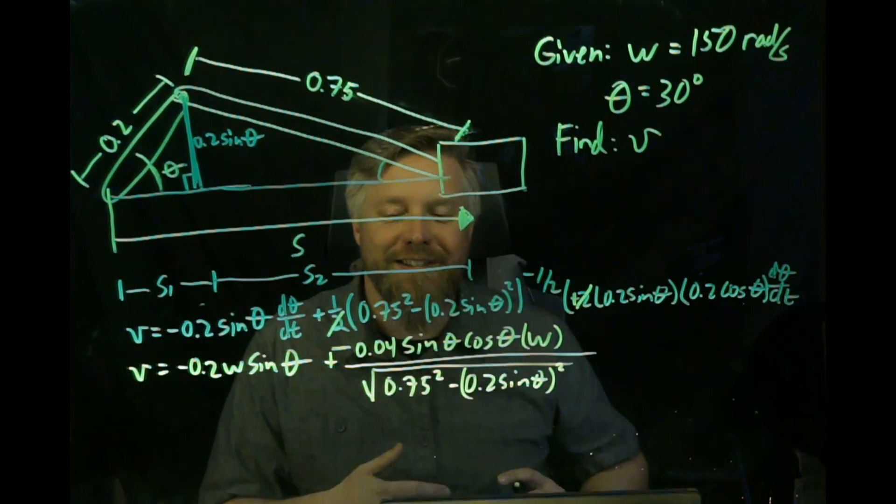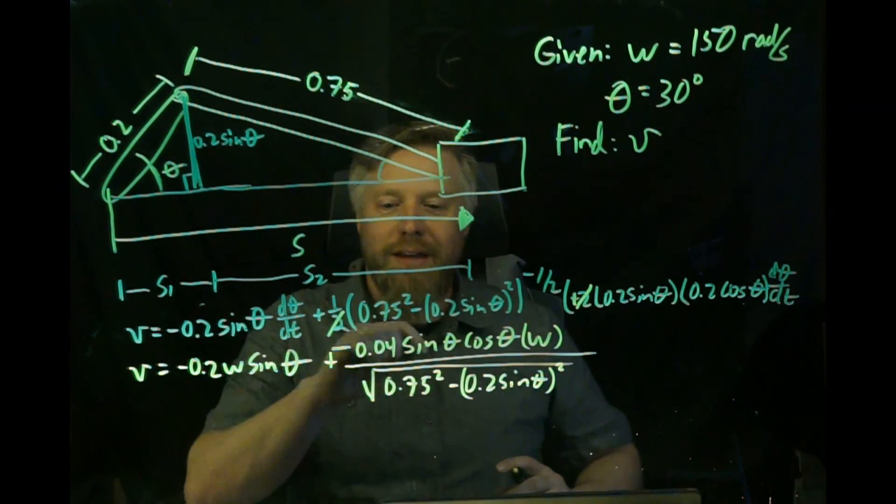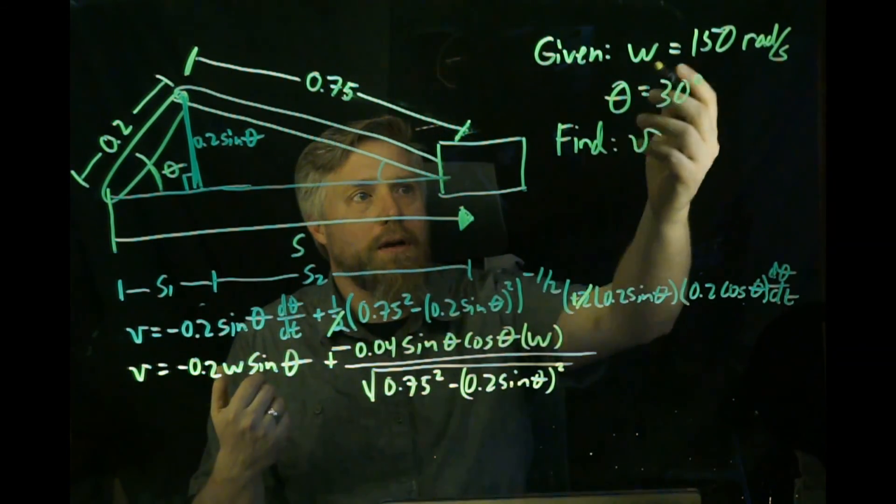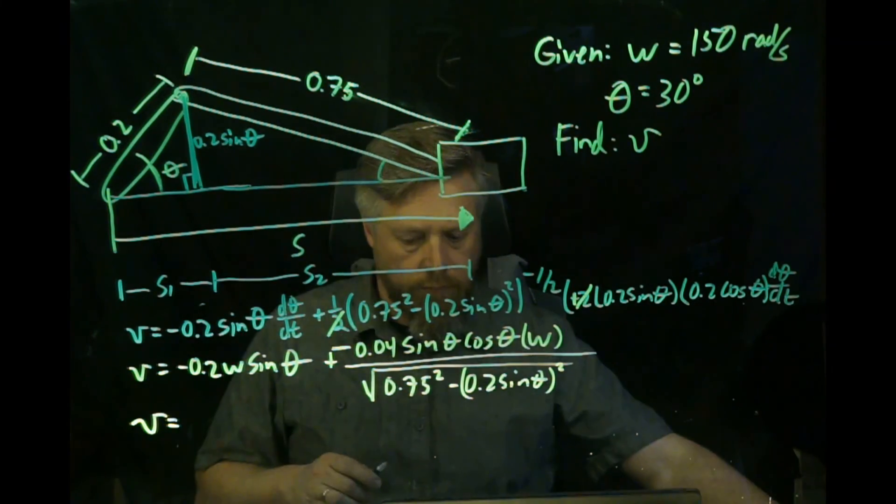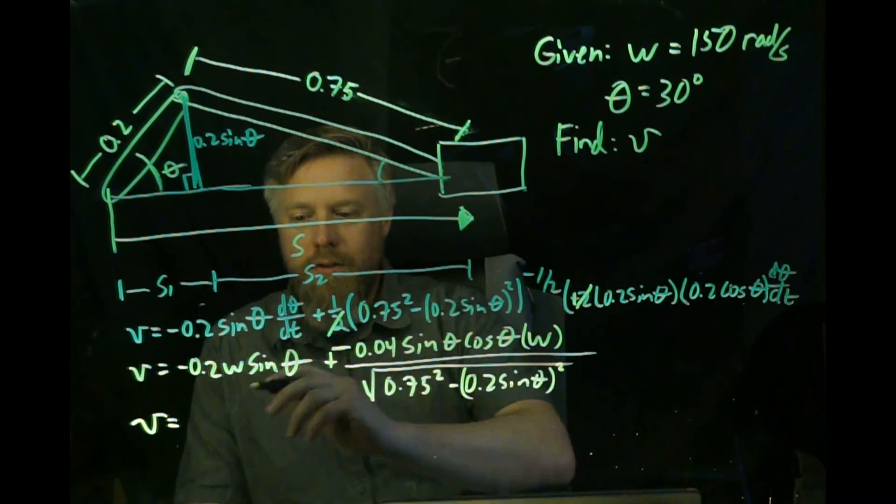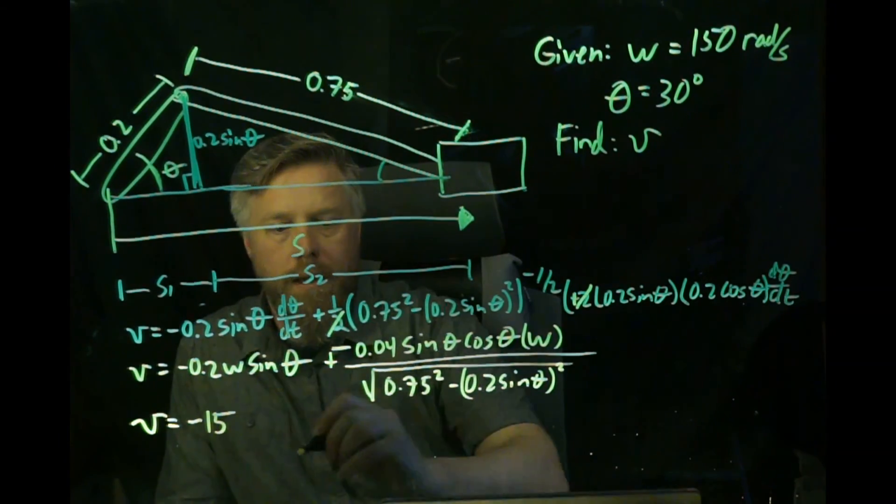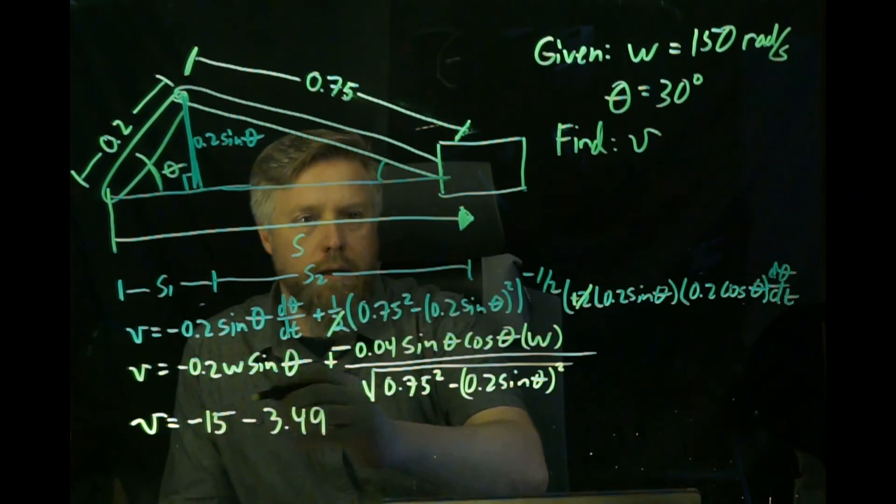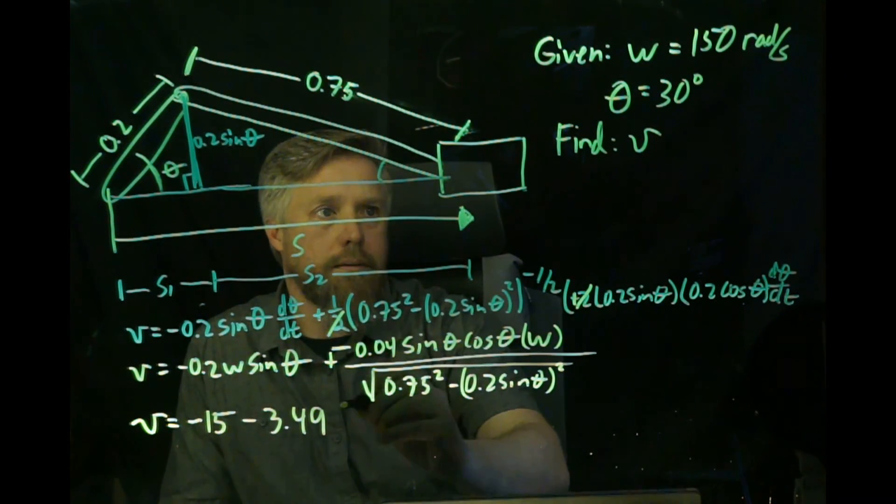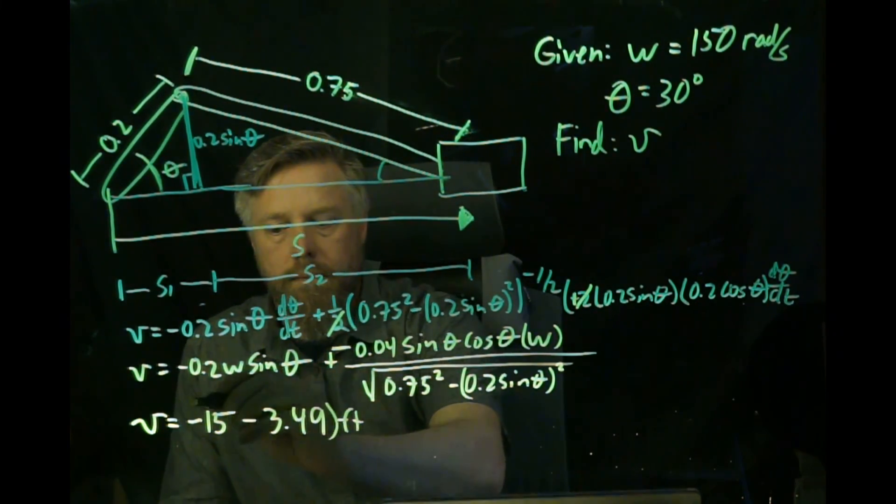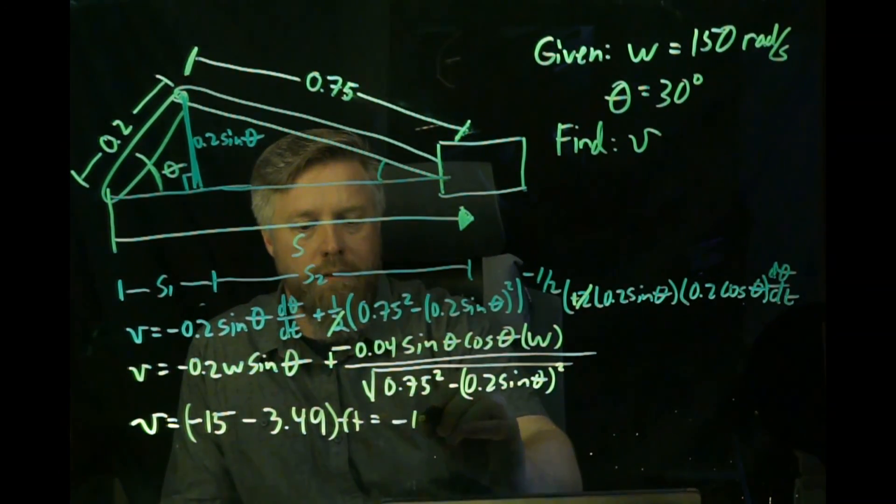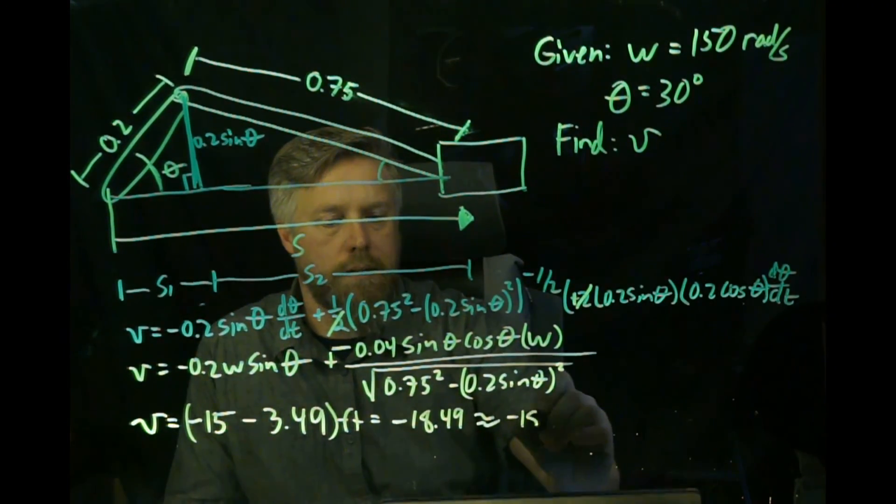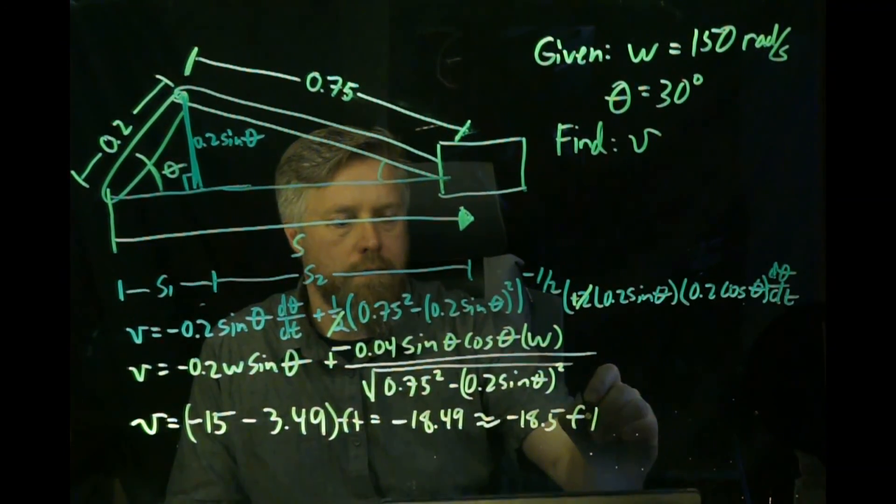We've got two negative terms. Now all we need to do is plug in what we have. We're going to plug in 30 for theta, 150 for omega, and come up with our answer. This first part ends up being negative 15 and the second part is minus 3.49, everything is in feet. So we end up with negative 18.49, or approximately negative 18.5 feet per second.